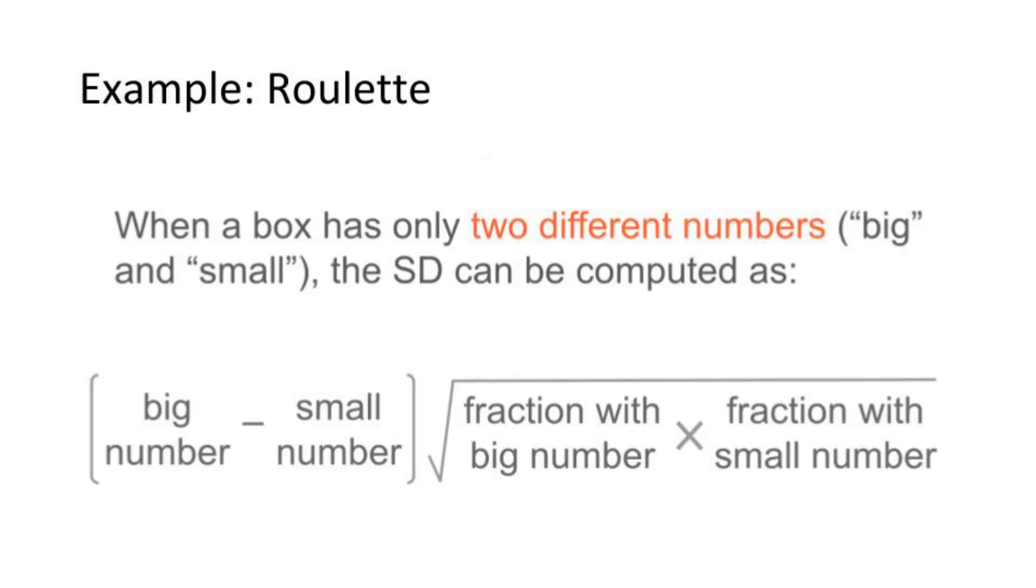So we need to calculate our standard error. And here's a little shortcut if you're doing the math by hand. If there's only two values in your box, the standard error can be computed as the bigger value minus the smaller value times the square root of the product of the two probabilities.